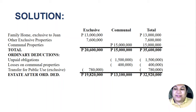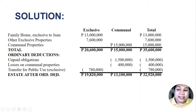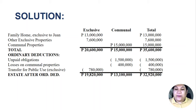The estate after deducting the ordinary deductions is: exclusive estate of 19,820,000 and communal estate of 13,100,000, for a total net estate after ordinary deductions of 32,920,000. After that, we can now claim special deductions.